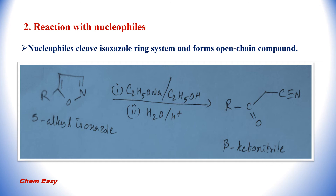The second type of reaction is the reaction of Isoxazole with nucleophiles. When treated with a nucleophile, the nucleophile cleaves the Isoxazole ring system and forms an open-chain compound. For example, 5-alkyl-Isoxazole reacts with a nucleophile — the ring system is cleaved and we obtain a beta-ketonitrile, which is an open-chain compound.